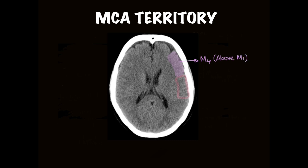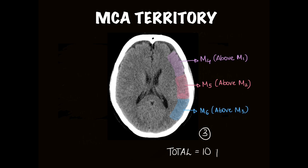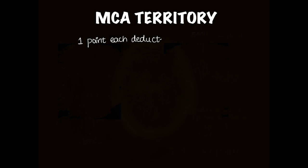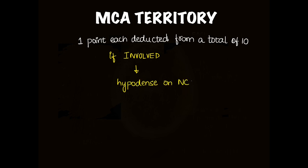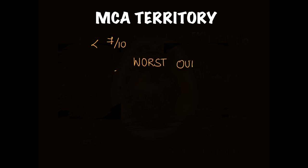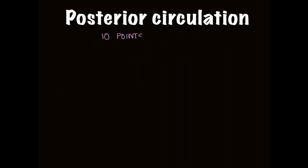The section above contains M4 (above M1), M5 (above M2), and M6 (above M3), giving 3 points in this section, for a total of 10 points. One point is deducted from the total of 10 for each area involved — to be involved, it should appear hypodense on NCCT. A score of less than 7 out of 10 is considered to indicate a worst outcome.